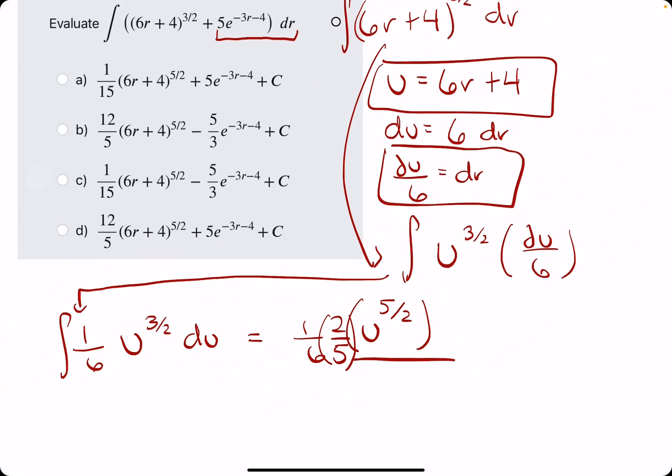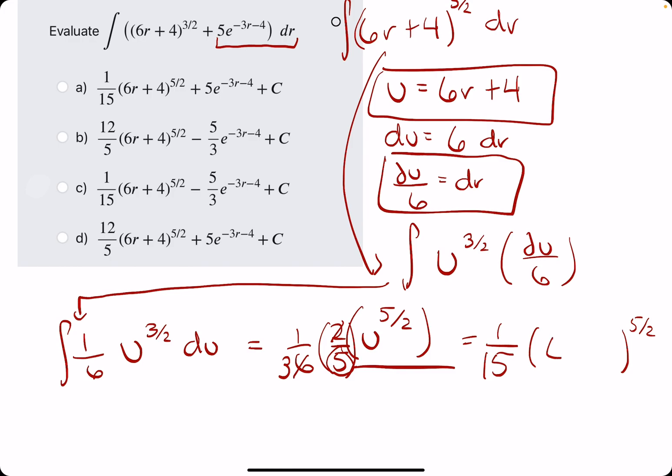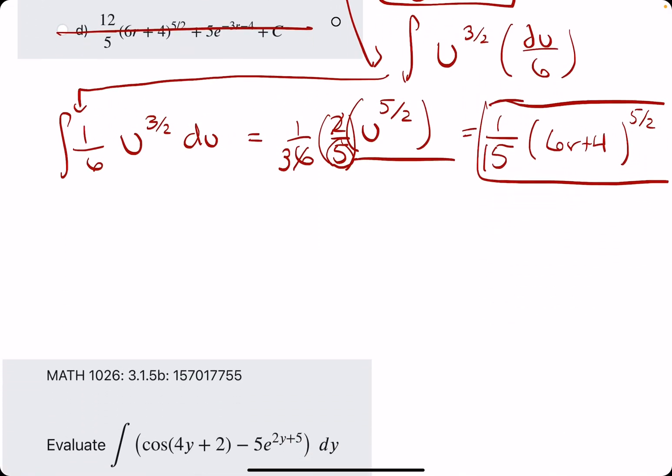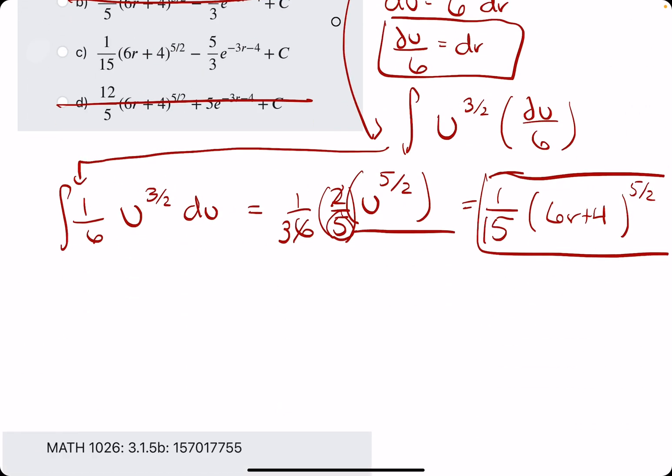Dividing by 5 over 2 is the same as multiplying by 2 over 5. So then we want to simplify 1 over 6 times 2 fifths. We can cancel 2 and 6, leaving us with 1 and 3. And then 1 on top, 3 times 5 on the bottom, would be 1/15. And then instead of u to the 5 halves, we can sub back in our u, which was 6r plus 4. So this is the first half. It's the first u-sub evaluation. So we can eliminate ones that don't have the 1/15. So then, the goal is to use u-sub to evaluate the second half.